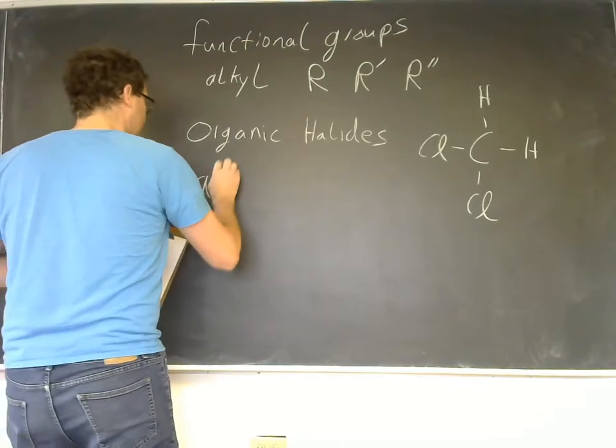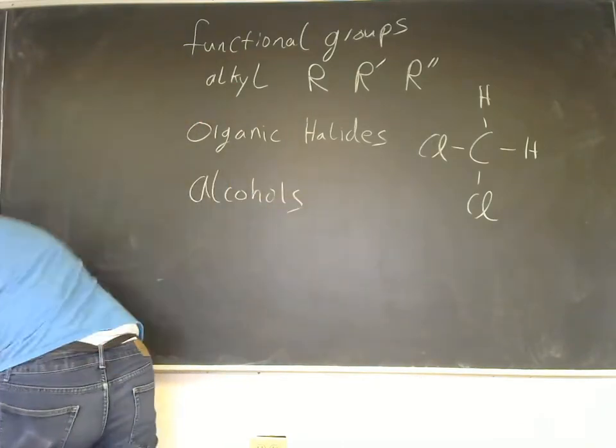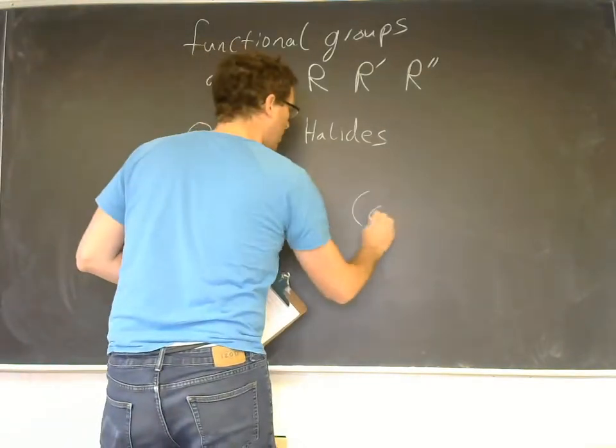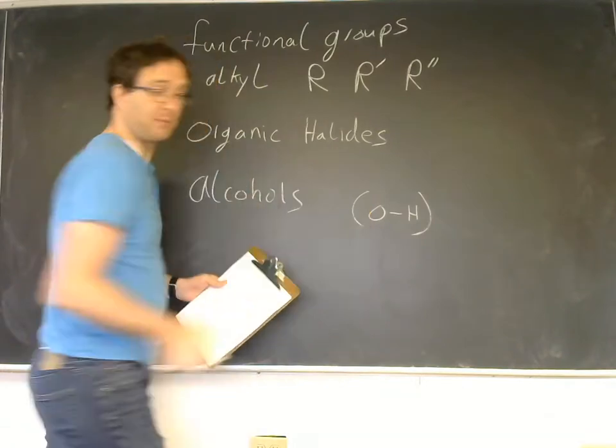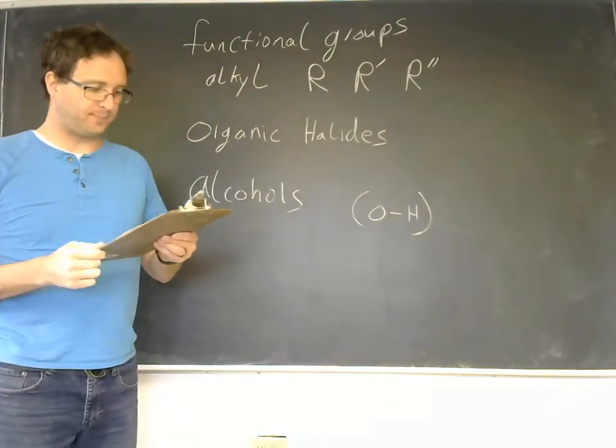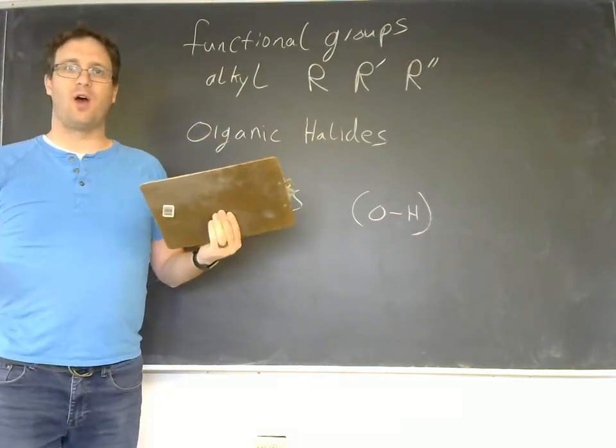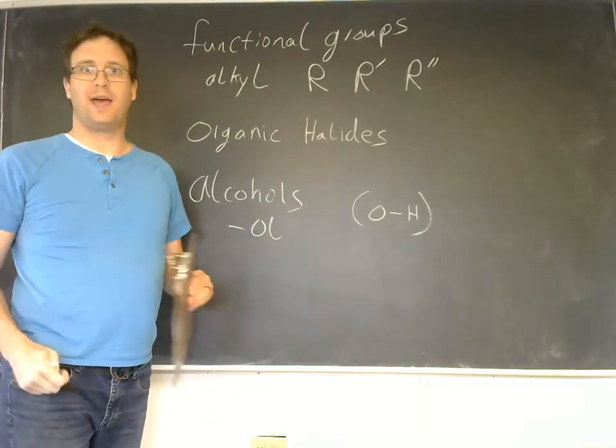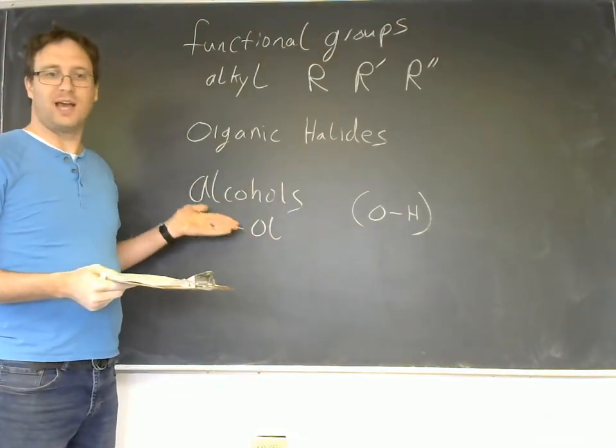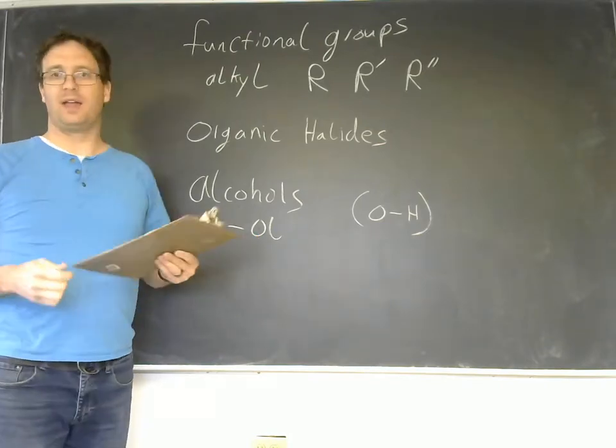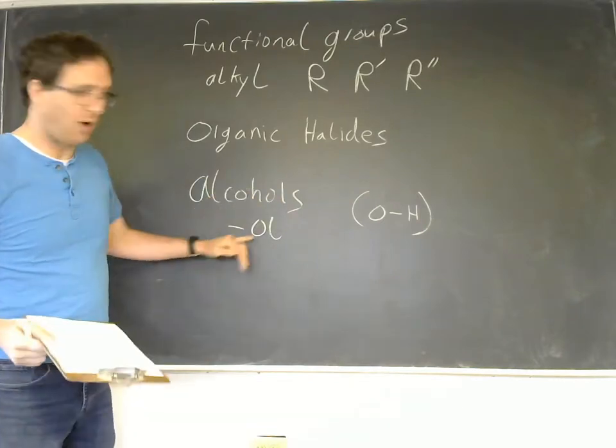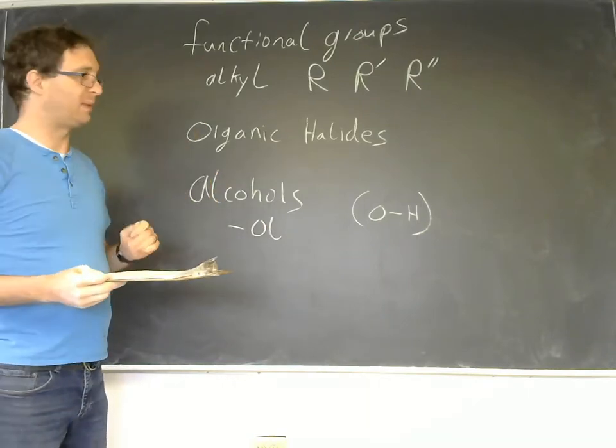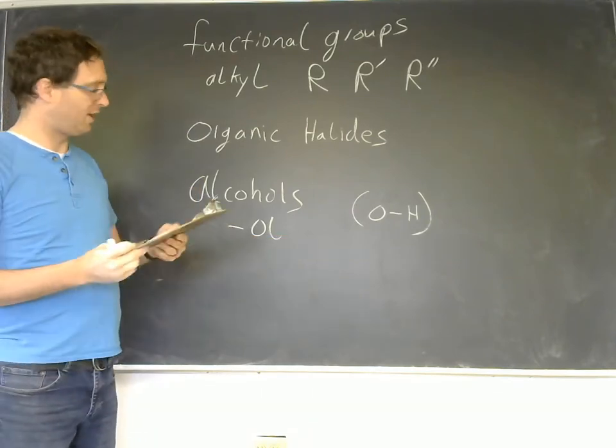So the next are alcohols. Alcohols contain the functional group OH, and that oxygen will be bonded to one of the carbons. Alcohols will be named with an OL ending. You've probably heard of ethanol and methanol. Ethanol is the alcohol which contains two carbons, based on the parent name of ethane, but you add an OL to the ending. Methanol is the alcohol which contains just one carbon. It's based on the parent name of methane, but you change the ending to be OL.